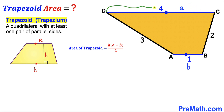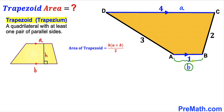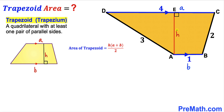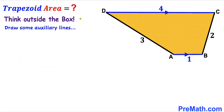Reverting our attention back to the problem: base a equals 4 and base b equals 1. The height AE of this trapezoid is represented by lowercase h. So our task is to find the value of height h before we calculate the area. We are going to think outside the box and draw some auxiliary lines to make our job simple.